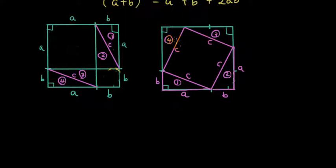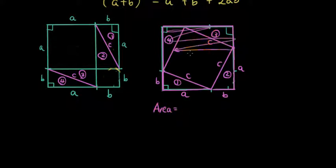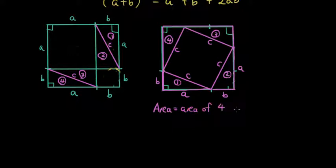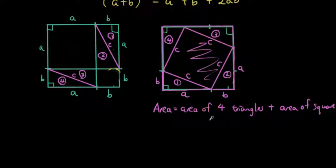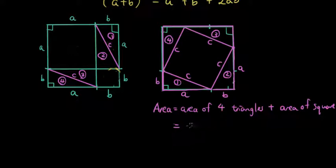Now we're going to express the area of this whole square using the new arrangement. The area of the whole square is now the area of four triangles plus the area of the square in the middle. What is the area of each triangle? The area of a triangle is base times perpendicular height divided by two, so the area of each triangle is A times B divided by two.